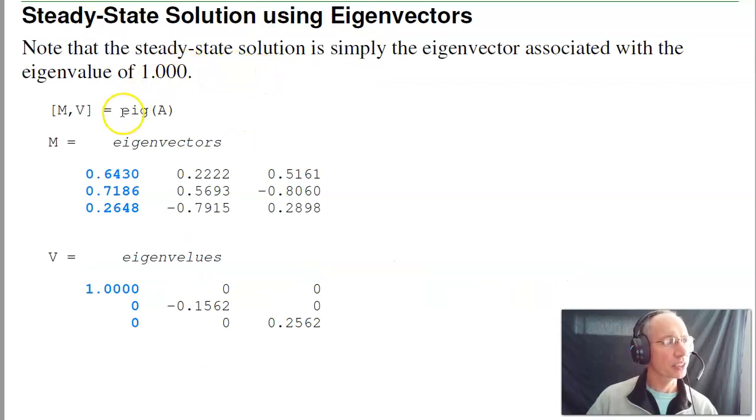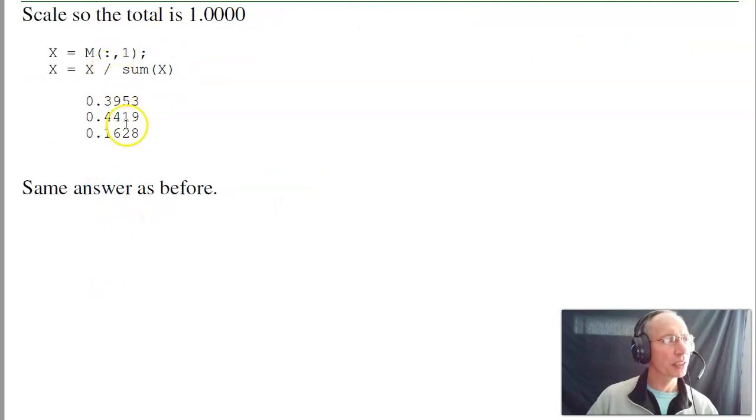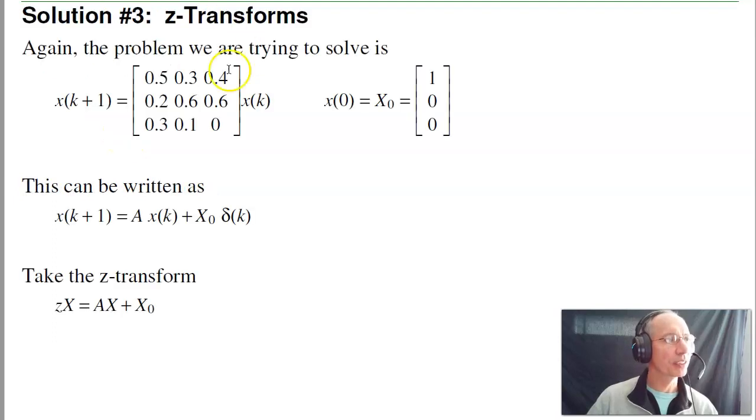Another way to find the steady-state solution is to look at the eigenvalues and eigenvectors. The eigenvalue at one has a corresponding eigenvector. That eigenvector is your steady-state solution. This isn't a valid probability. The column doesn't sum to one. If I scale it so that it is one, there's my steady-state solution, same answer we got before. So that's three ways to find the steady-state.